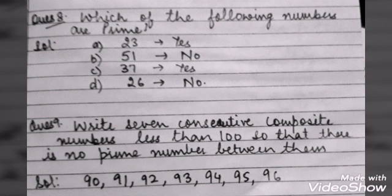So the numbers are 90, 91, 92, 93, 94, 95 and 96. These are the 7 composite numbers in which there is no prime number in between.